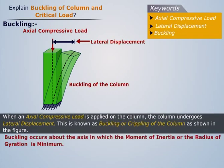Buckling occurs about the axis in which the moment of inertia or the radius of gyration is minimum.